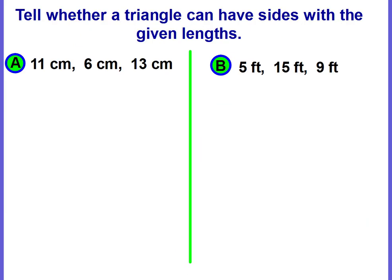So let's do an example. Tell whether a given triangle can have sides with a given length. So we have to try all three combinations. I'm going to start in order and do 11 plus 6. Is that greater than 13? 11 plus 6 is 17. That is greater than 13.